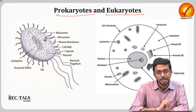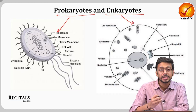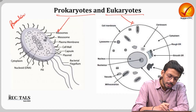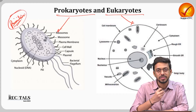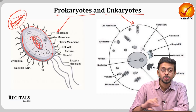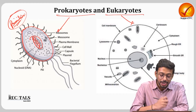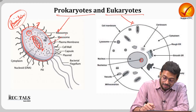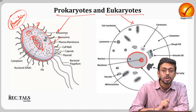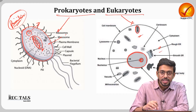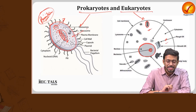Let's start from the basics: prokaryotes and eukaryotes. Prokaryotes are primitive cells — very rudimentary. They do not have proper membrane-bound organelles, and they have only a single strand of DNA. Eukaryotic cells, on the other hand, have multiple strands of DNA clubbed together in the form of chromosomes, a proper nucleus, and the genetic material is contained within that nucleus.